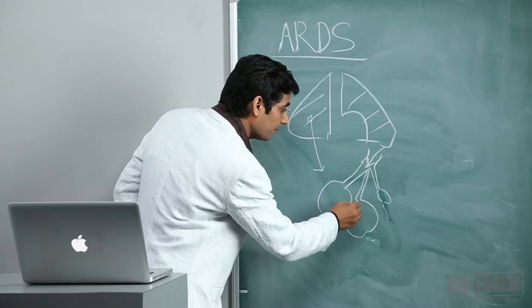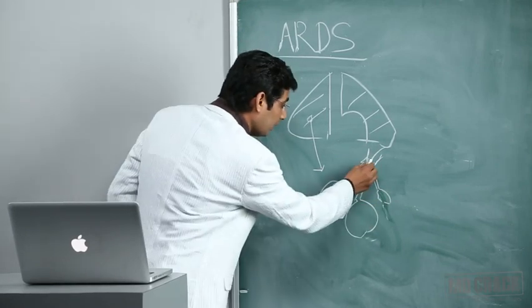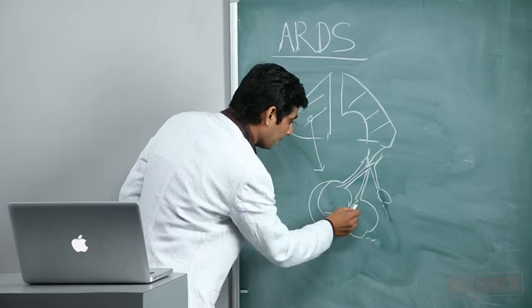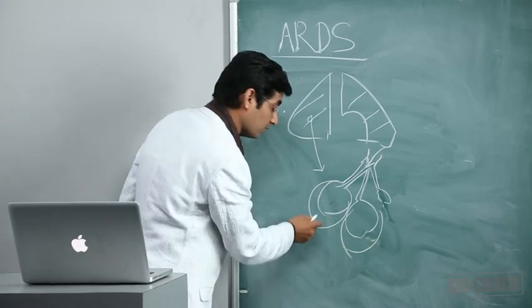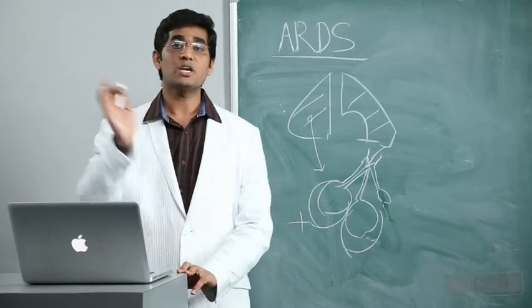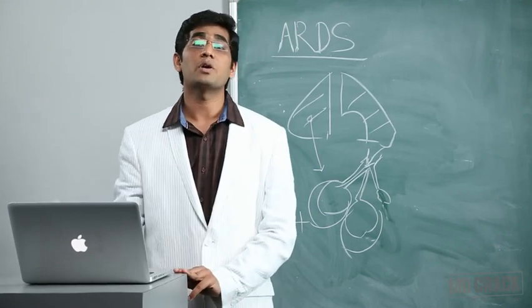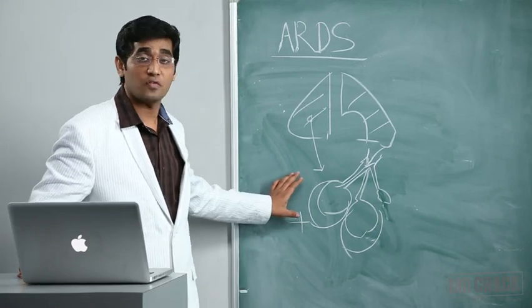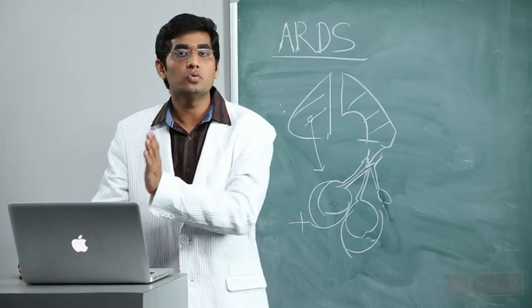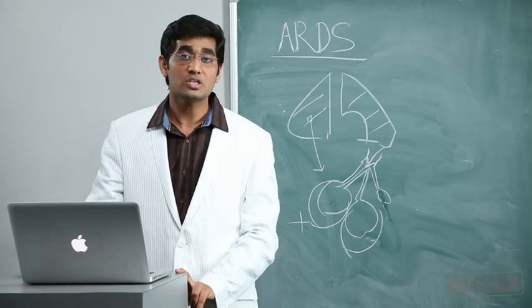When we give conventional tidal volume of 10-12 ml/kg and it goes to this lung, as the collapsed alveoli fail to open, all air goes to normal alveoli. These normal alveoli over-distend and rupture, damaging them by putting patient on ventilator. With conventional tidal volume we do more damage than treatment. You need to take care of tidal volume - you cannot apply conventional formula to ARDS patients.